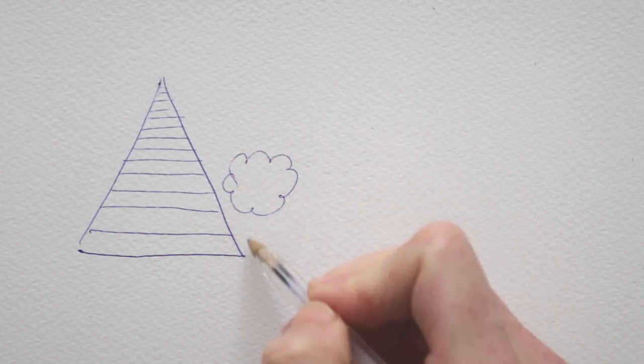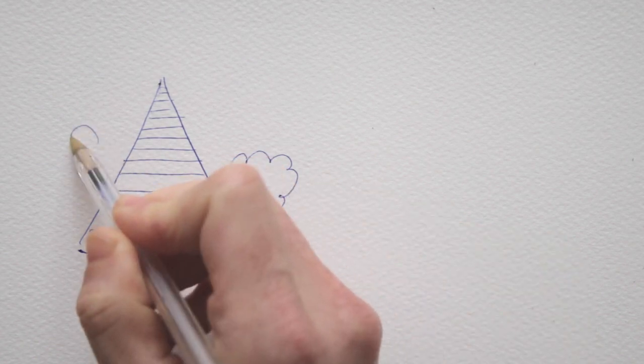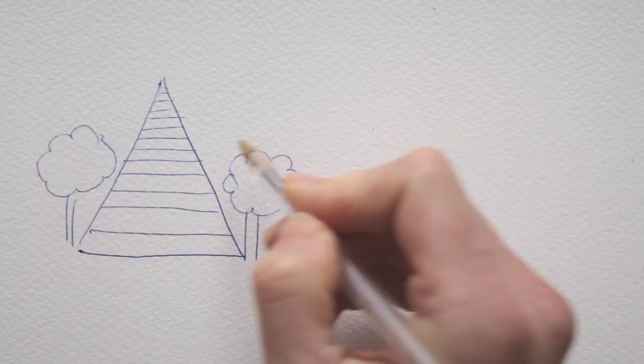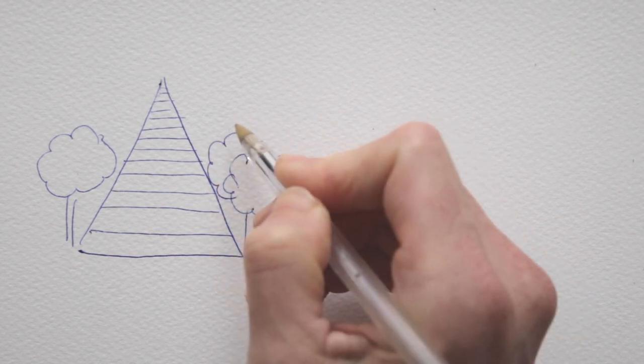By making the ones in front overlap and drawing them smaller and smaller towards that vanishing point, you do start seeing that illusion of depth now, don't you?